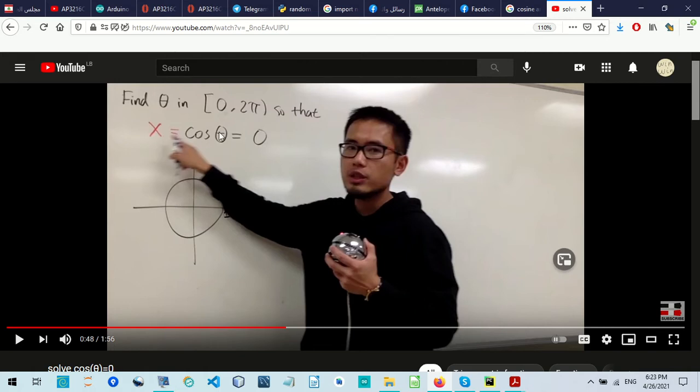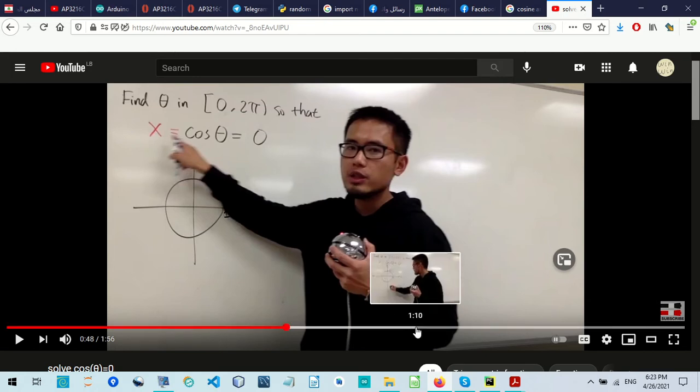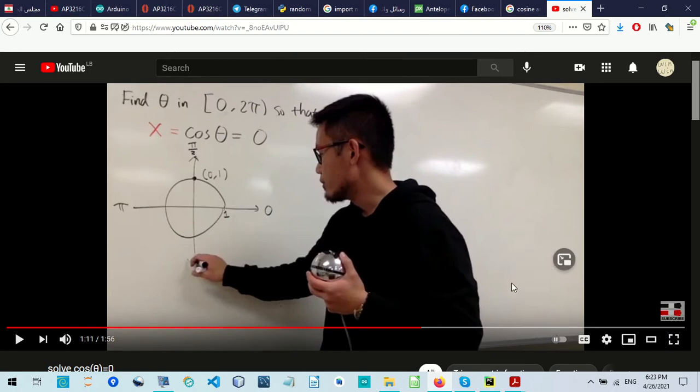So cosine theta equals zero, so x equals zero. We're searching for points on the circle whose abscissas are zero. We have two points, either this one or this one. This is what the teacher is trying to say.